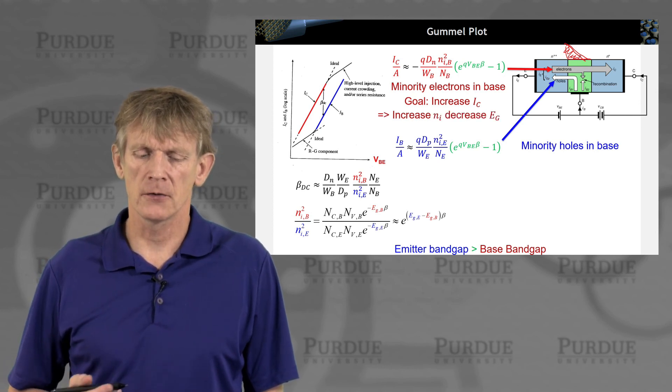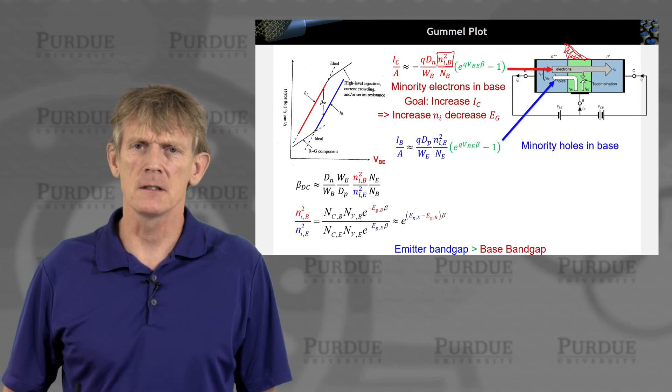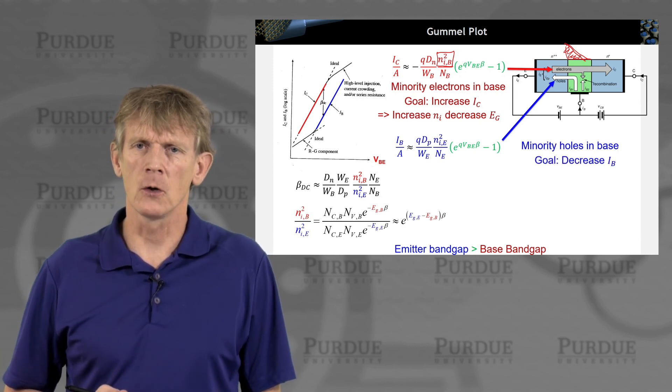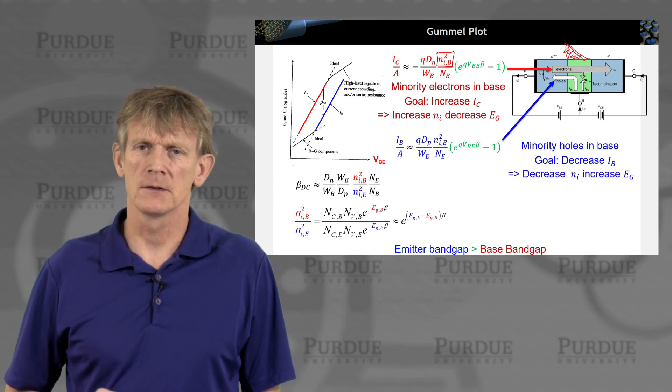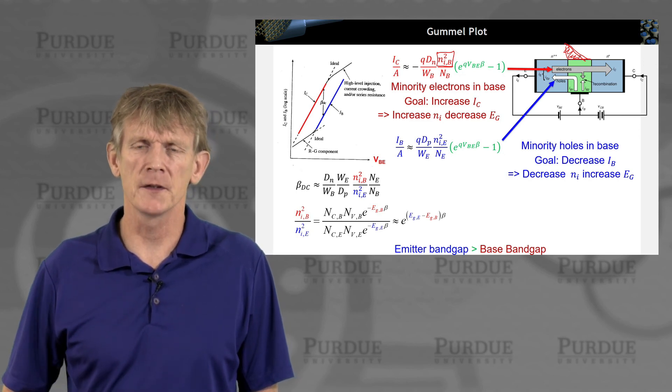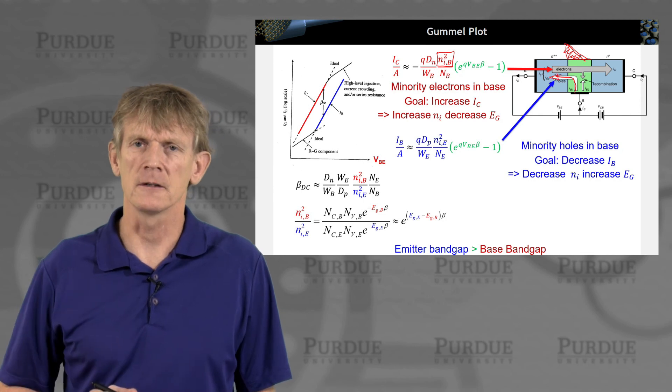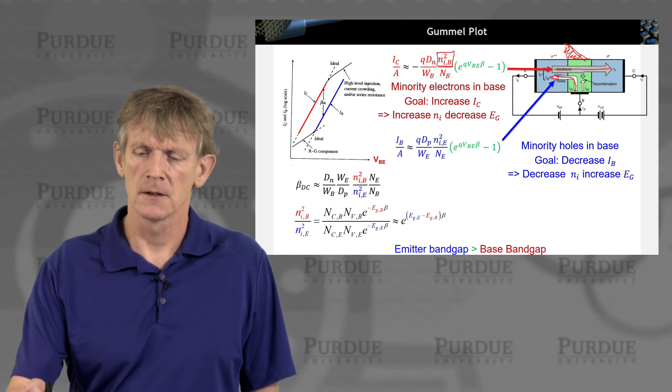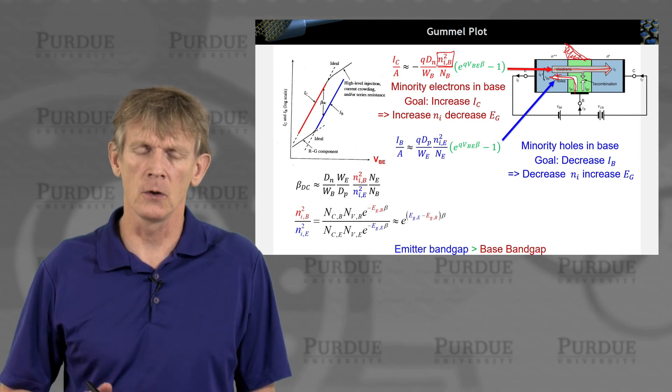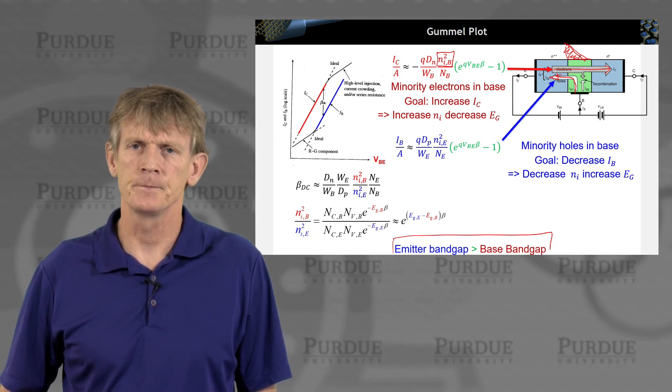So how do we increase IC? Well, we can increase Ni, which is up here, and we'll do that by a decrease in Eg. And here the goal is really to decrease the minority holes that are flowing back into the emitter. And so we could say we want to decrease Ni and therefore increase Eg. So those are the more physical arguments. But the ultimate goal really is here, can you reduce this hole current and can you increase this forward collector current? That's the main goal. And what this says is you want to have the emitter band gap to be larger than the base band gap.